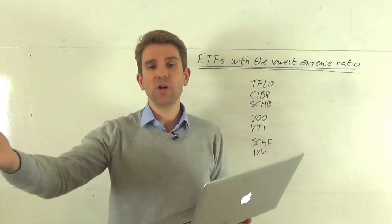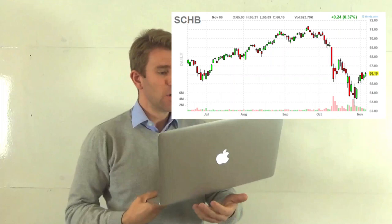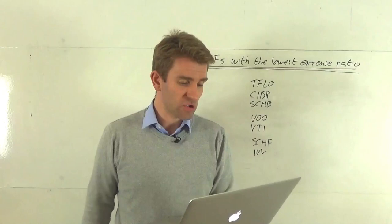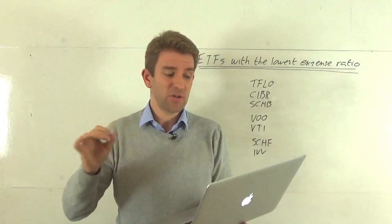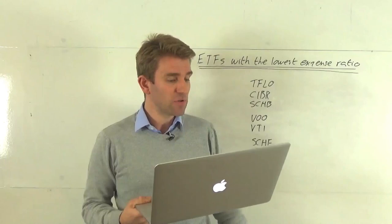The next one we've got is the SCHB, which is Schwab US Broad Market ETF. This basically tracks the Dow Jones Broad Stock Market Index, which is about 2,500 publicly traded companies, the largest ones, 12 billion or 13 billion assets under management there, or net assets. The three-month volume on this is almost 800,000 shares, so reasonably easy for us to get in and out of. Dividend yield, 1.78%, not bad. Expense ratio, really low, 0.03% on this.